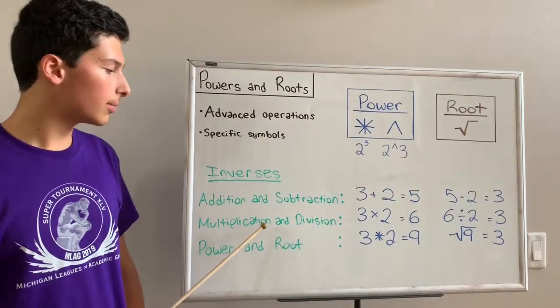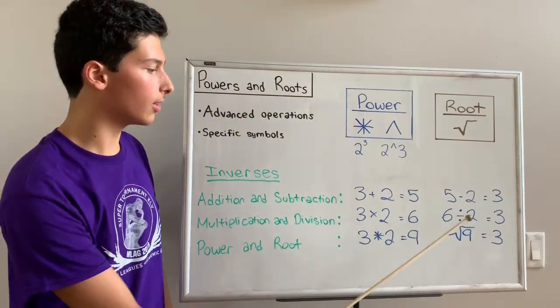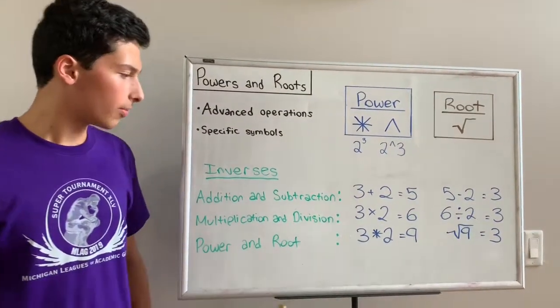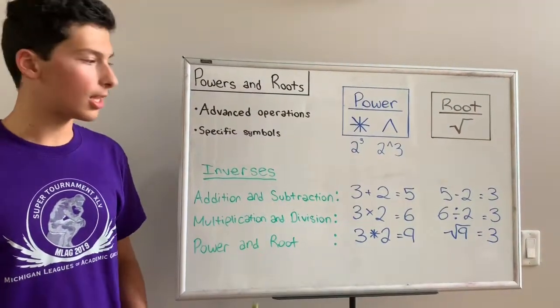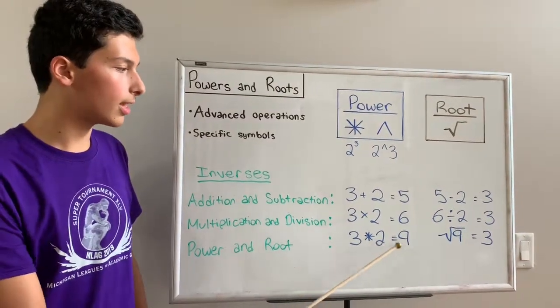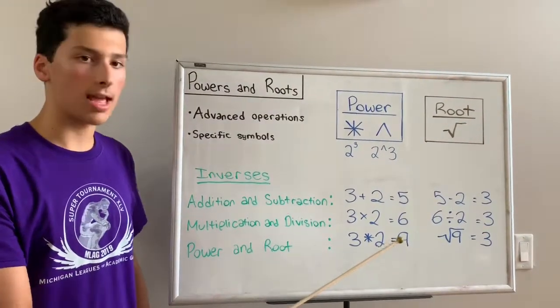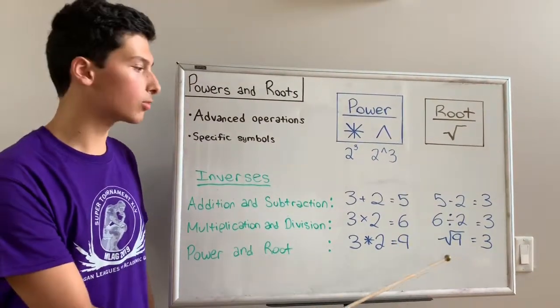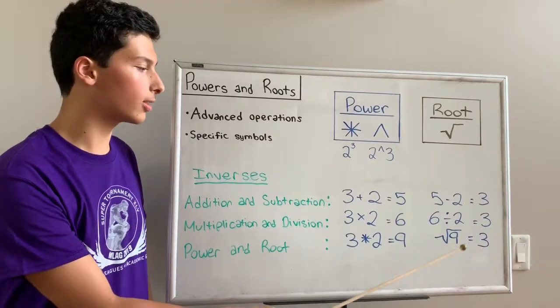The same is for multiplication and division, as seen here. For powers and roots, if you did 3 to the power of 2, you'd get 9. If you did the square root of 9, you'd get 3.